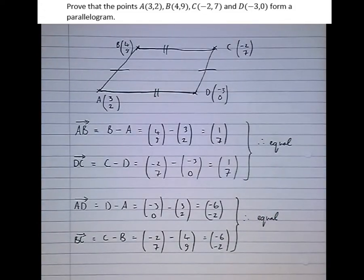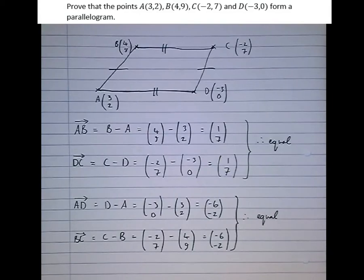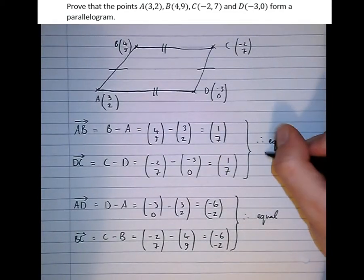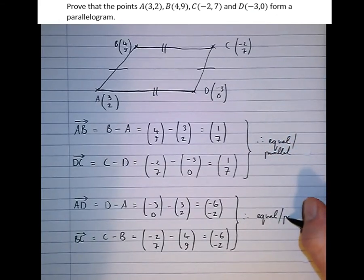Now think back to the definition of parallel. Parallel vectors are vectors that are multiples of each other. Well these are multiples of each other. They're a multiple of one of each other. So therefore equal, or we could say parallel. Equal and parallel.